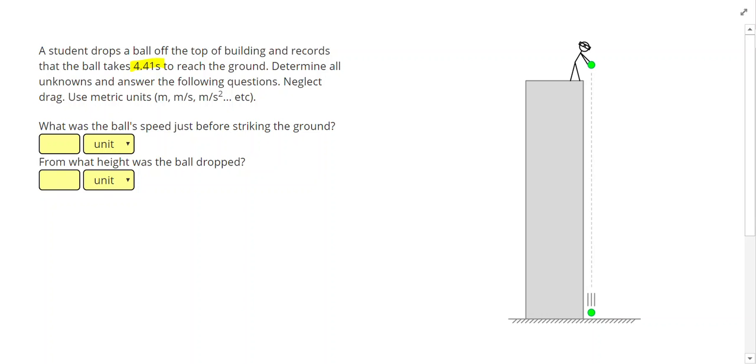Alright, we're going to start this problem by listing our initial speed, average speed, final speed, distance, time, and acceleration, just like I always do in a one-dimensional motion problem. In the problem, I was given 4.41 seconds, and I know that's the time.